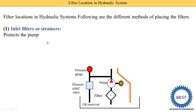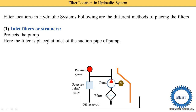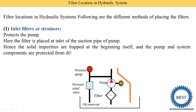The function of the inlet filter is to protect the pump from various impurities. If impurities are supplied to the pump, the pump wears out quickly and needs to be replaced. Since the filter is placed at the inlet of the suction pipe, solid impurities are trapped at the beginning, and the pump and system components are protected from dust and solid impurities.